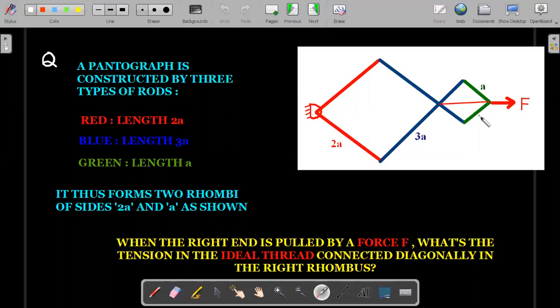which is of length a. This is the last one. Two green rods are there and there is a hinge here.